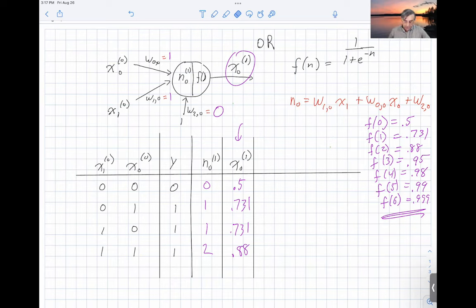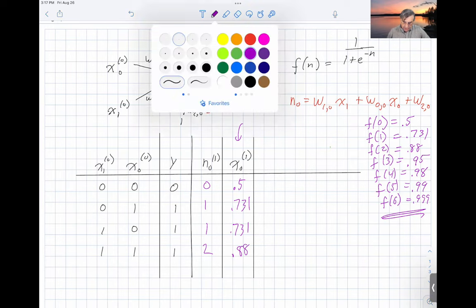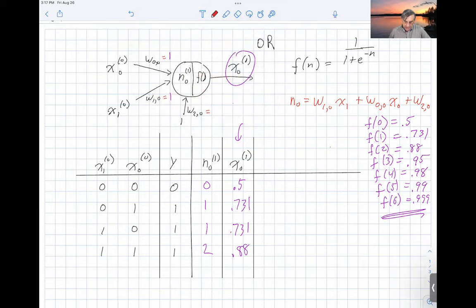One possibility is to set this W2 to negative 1. And under those conditions, our N0 for the first row is negative 1. For the next row is 0, so we have 0 times 1 plus 1 times 1 plus negative 1, that gives us a 0. That gives us a 0, we also have a 0 for the third row.